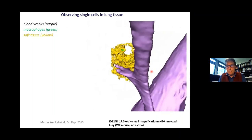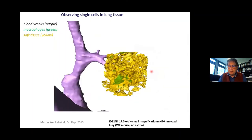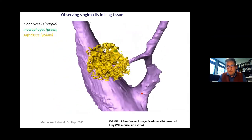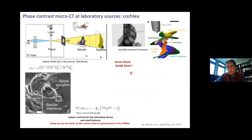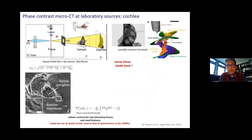We can zoom in at different magnifications, but to achieve sub-cellular resolution we need very small source spots, high coherence, and synchrotron radiation. Comparing laboratory and synchrotron performance: the phase-contrast tomography quality we now achieve with laboratory instruments exceeds what was available at third-generation synchrotrons when they came online in the 1990s. The liquid-jet technology pioneered by Hans Hertz's group has played an important role, providing the power density required.